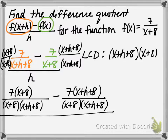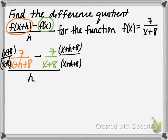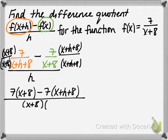That entire quantity is divided by h. Since we now have two fractions with the same denominator in the numerator, we can subtract and write it as one big fraction: 7 times the quantity x plus 8, minus 7 times the quantity x plus h plus 8, all divided by the common denominator — and then that quantity is divided by h.